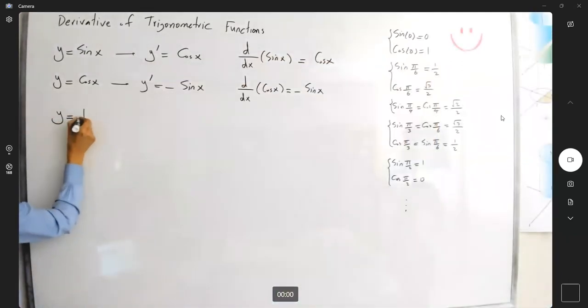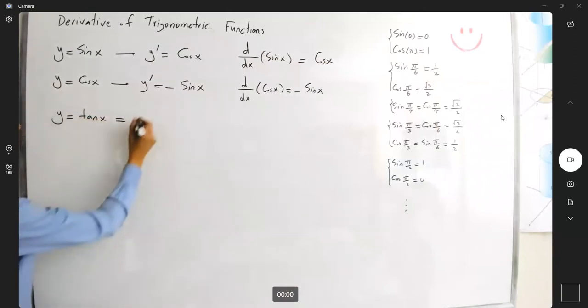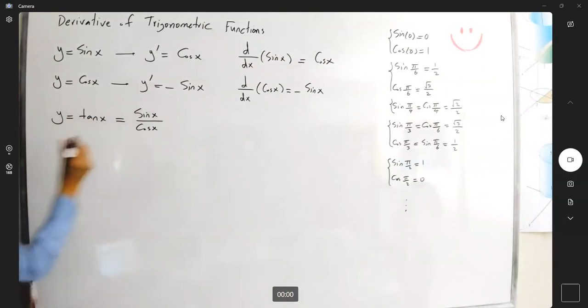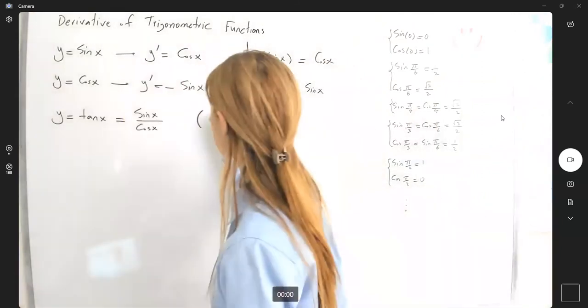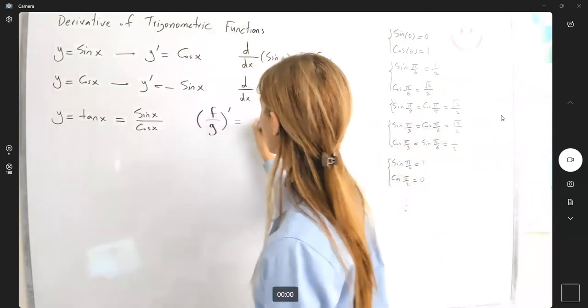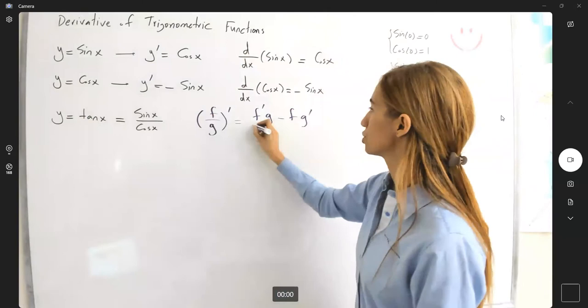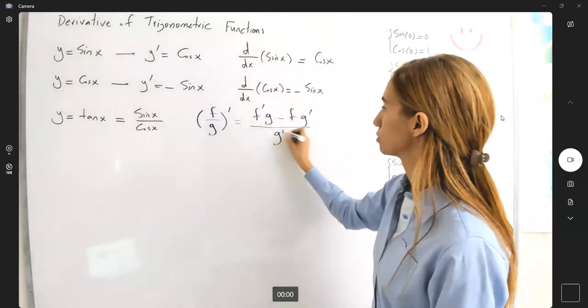When it comes to tangent of x, remember tangent is defined as sine over cosine, sine x divided by cosine of x. Here you can apply the quotient rule that you learned before. If you have f divided by g, the derivative becomes f prime g minus f g prime divided by g squared.